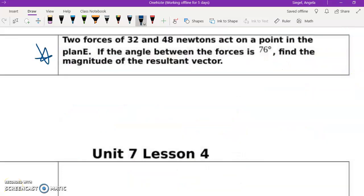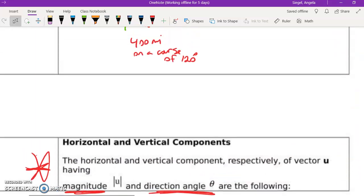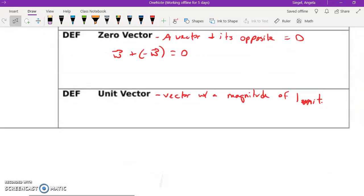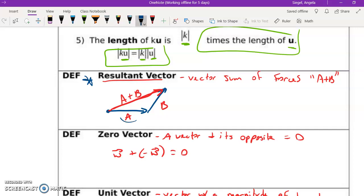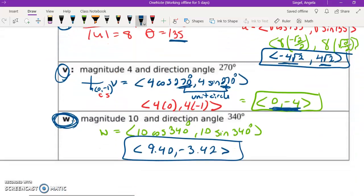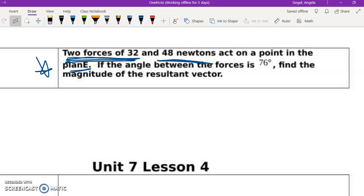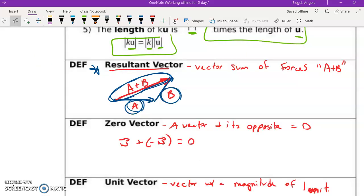Okay, so for this example, the word problem looks really scary, but it's really not at all once you kind of decode it. Okay, so we have two forces of 32 newtons and 48 newtons that act on a point in the plane. Okay, so it's going to look like this. We've got these two forces that are working together and it's going to ask us to find the magnitude of the resultant vector. So we're looking for this part right here. So I'm going to jump down there, but this is like, we've talked about this before just briefly.